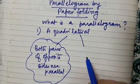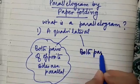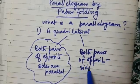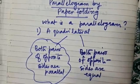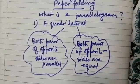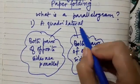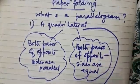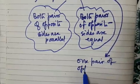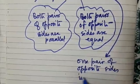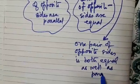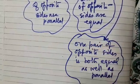Another definition: if both pairs of opposite sides of the quadrilateral are equal, then in that case also we will get a parallelogram. And a third situation: if we make a quadrilateral such that one pair of opposite sides is both equal as well as parallel, then in that situation also we will get a parallelogram.